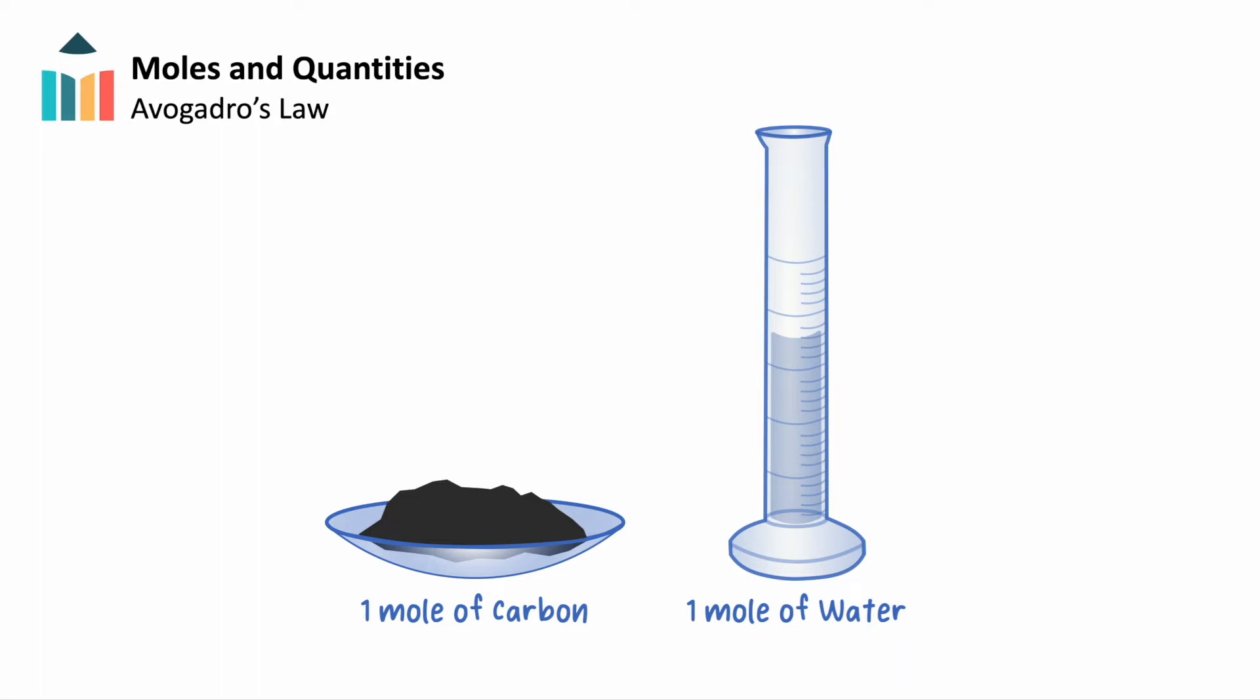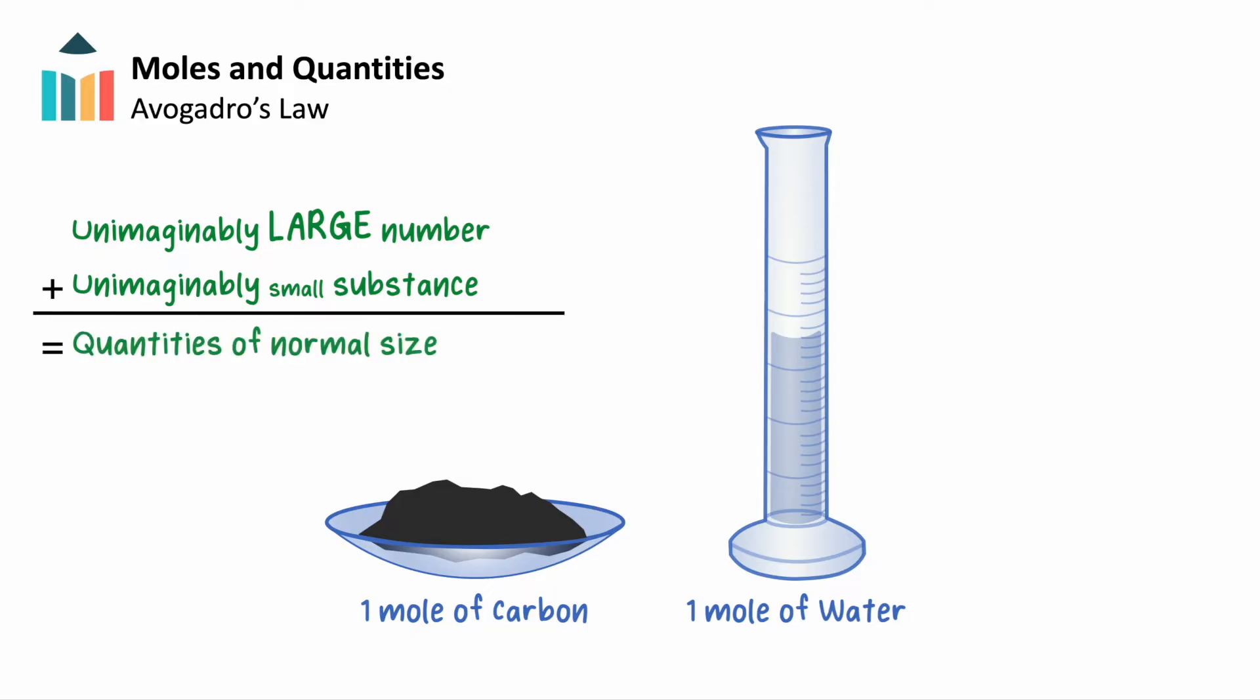When we mix a number that is unimaginably large with a substance that is equally unimaginably tiny, we create quantities that are somewhere in the middle, with amounts that our brains can actually understand.